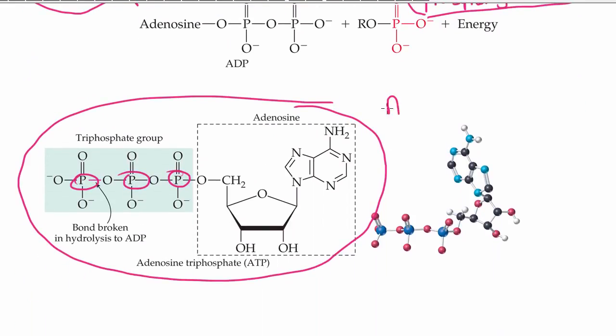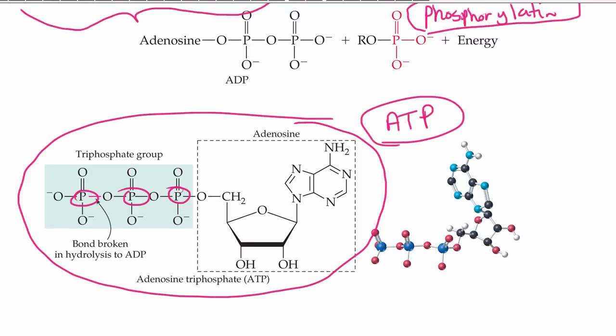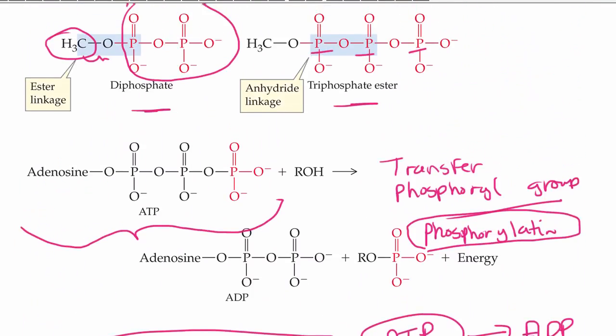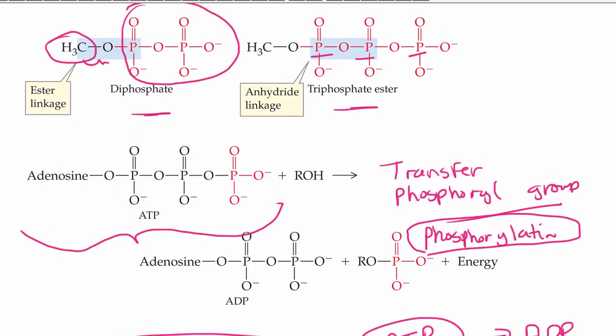Adenosine triphosphate is also known as ATP. That's our energy molecule, if you will. What actually produces the energy is the hydrolysis, when one of these phosphoryl groups is removed. The bond is broken in hydrolysis. When this bond is broken, then we end up with ADP, which would be adenosine diphosphate. Again, it's the transfer of a phosphoryl group.